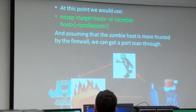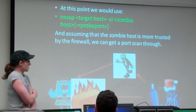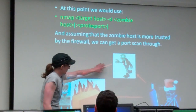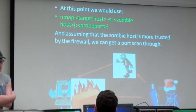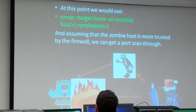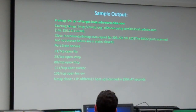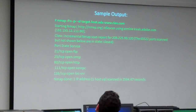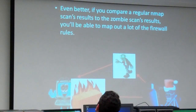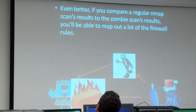Like we did with ACLs earlier — say this is a trusted IP. It's got a firewall rule set that implicitly allows that specific IP. This is a sample output from what a zombie scan would look like; it looks just like any other NMAP scan. If you compare your zombie scan results with a regular scan result, you'll be able to map out the firewall rules.